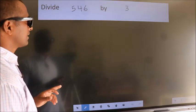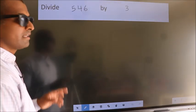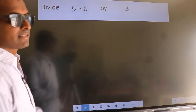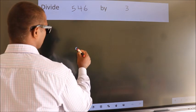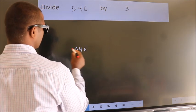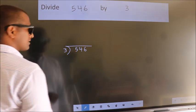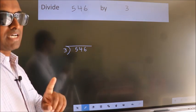Divide 546 by 3. To do this division, we should frame it in this way. 546 here, 3 here. This is your step 1.